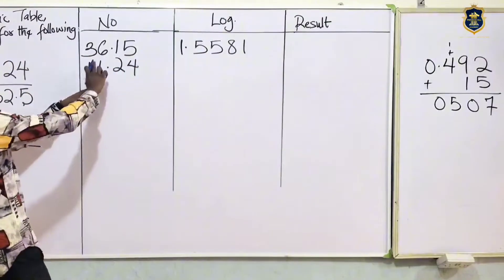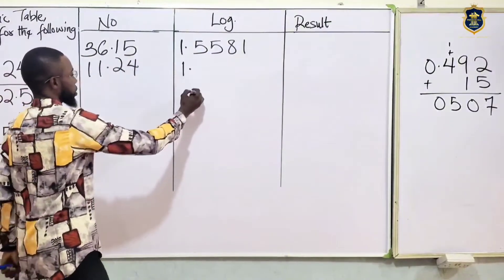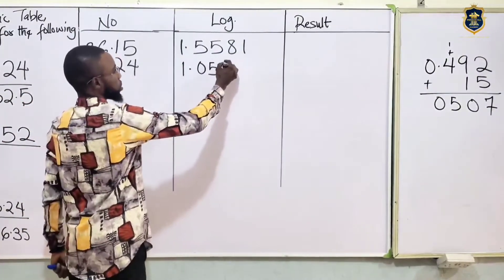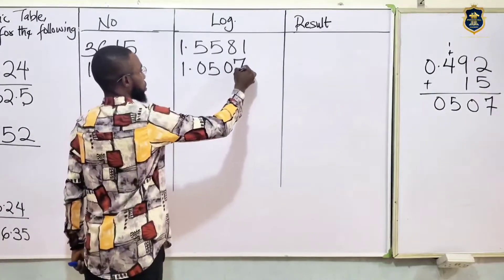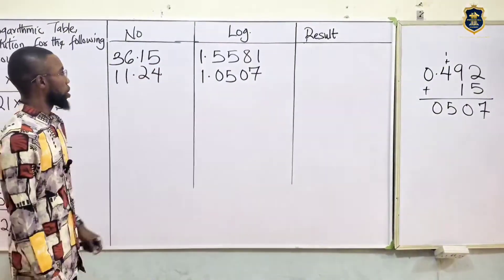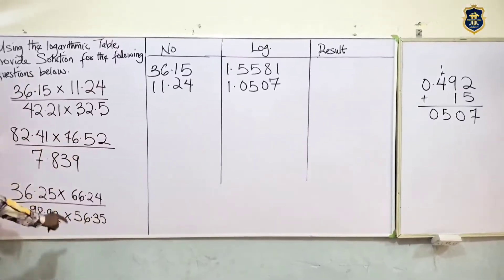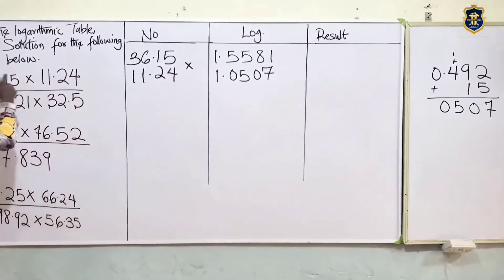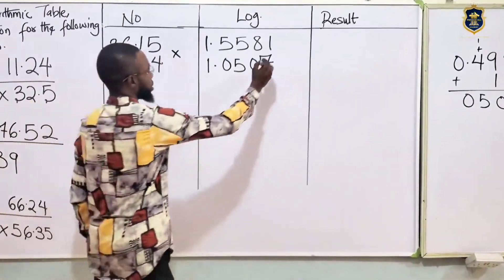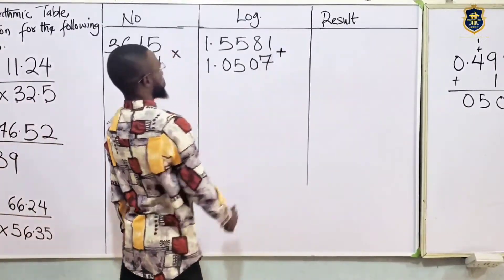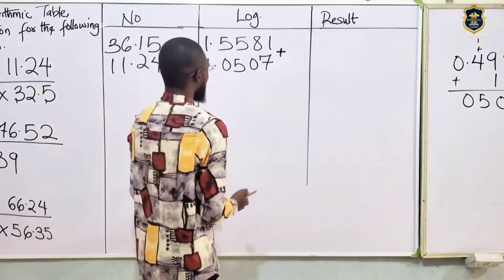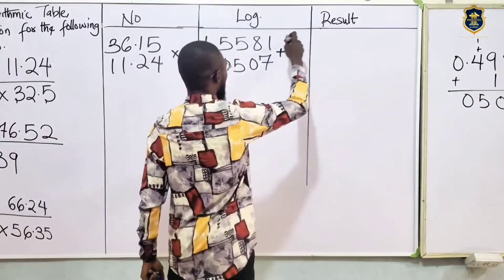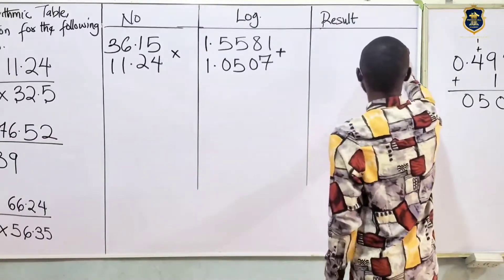Originally from here we're picking 1 — it's 1 point 0507. So what do we do with this? Because we are multiplying — there's a multiplying sign here — we will add them. Let me use another marker for my answer and results. So adding: 1 plus 7 is 8.